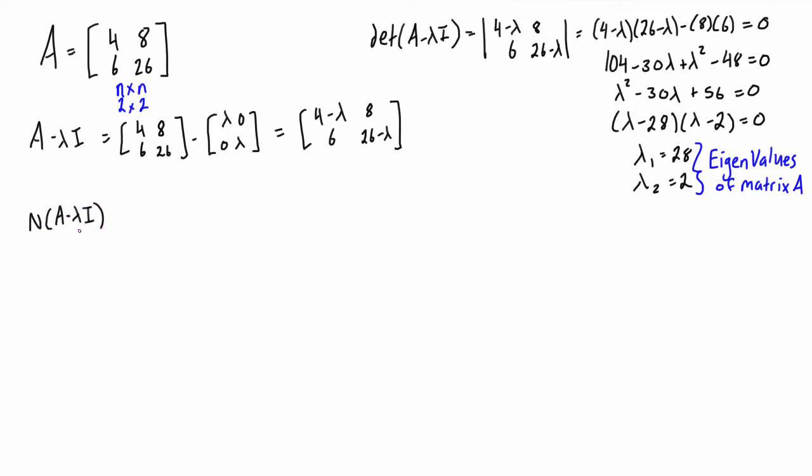The way that we do this is we find the null space of A minus lambda I, but we personalize this or specify this for each eigenvalue that we're dealing with. We're going to do this once for eigenvalue number one, and again for the second eigenvalue.